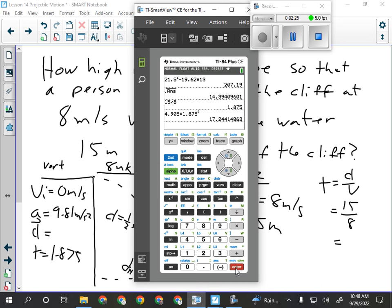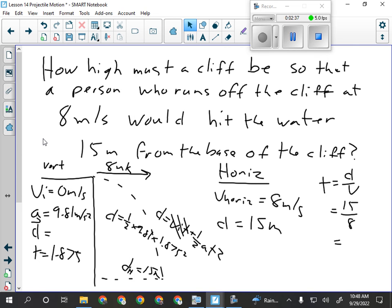So the cliff has to be, oh, we only have one significant digit here. Two times 10 to the 1 meters. I won't do that on the test. I'll never give you a question. I would have one significant digit. That's just silly. So yeah, 17 meters or 2 times 10 to the 1 meters would be the height of the cliff. Is that ringing a bell?